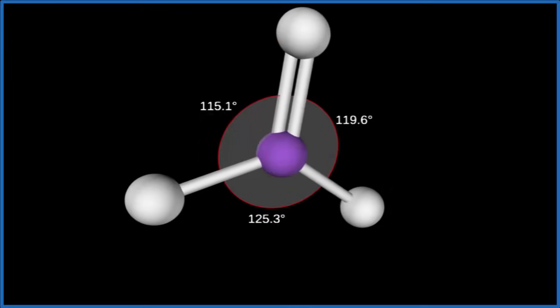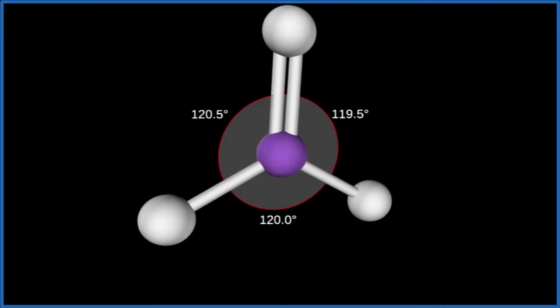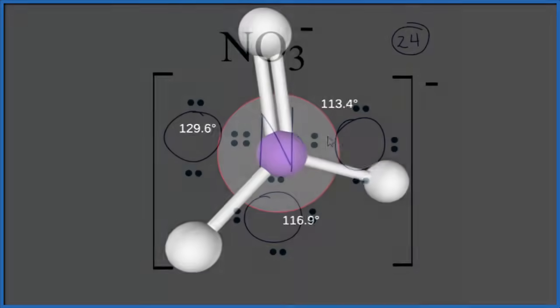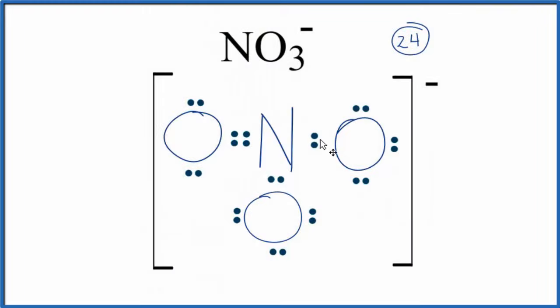The electron geometry, since there aren't any lone pairs, would just be trigonal planar as well. Let's go back to our Lewis structure. Since we have this double bond here and single bonds, we will have resonance. And we could have drawn this with the double bond here or here, or like we have it here. So we have three resonance structures.